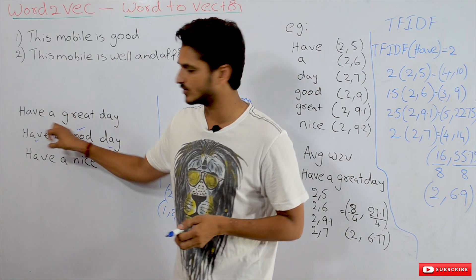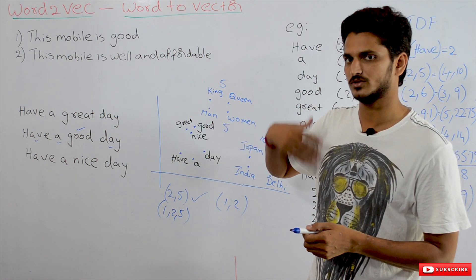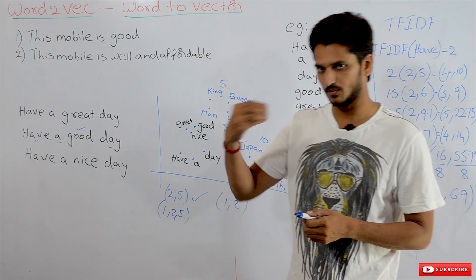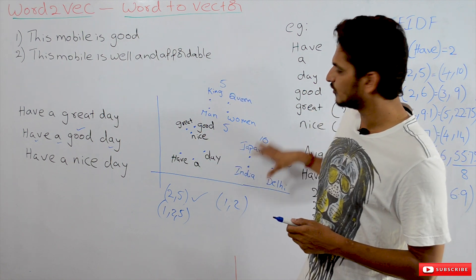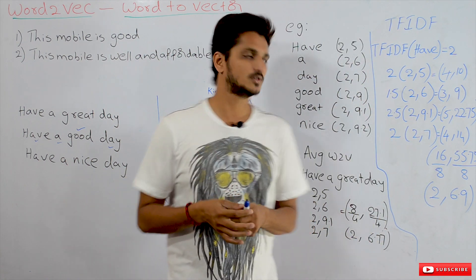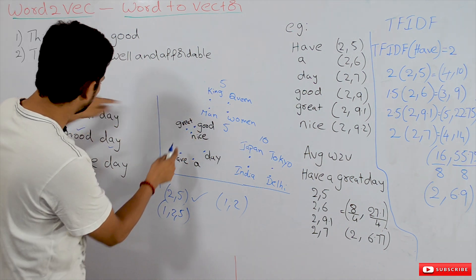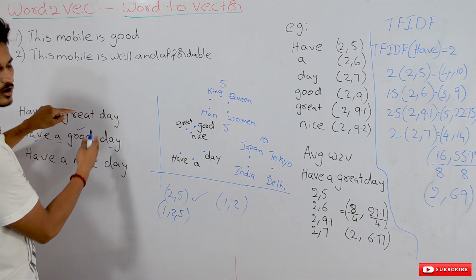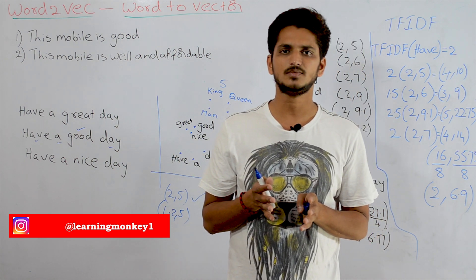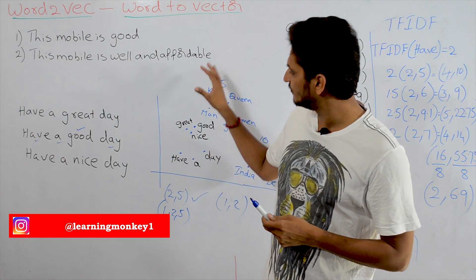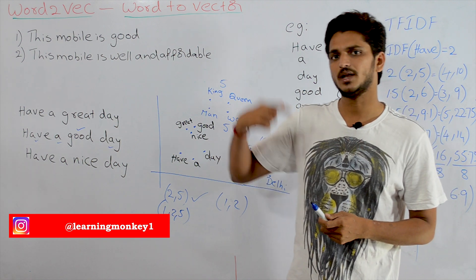This is what Word2Vec will do — it takes words from our data corpus and assigns a vector in any-dimensional coordinate space. We can specify our own dimensions: 50 dimensions, 100 dimensions, and so on. How these values are assigned, how these distances are maintained, how similar words are grouped together based on context — this concept we will understand in neural networks. For now, just remember this is the way Word2Vec is executed; the detailed how will come in the neural networks section.